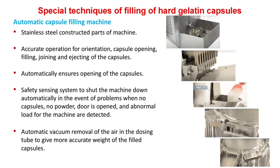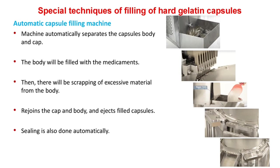Automatic capsule filling machine: constructed of stainless steel parts; provides accurate operation for orientation, capsule opening, filling, joining and ejecting of capsules. Automatically ensures opening of capsules. A safety sensing system shuts the machine down automatically in the event of problems — no capsules, no powder, door is opened, or abnormal machine load detected. Automatic vacuum removal of air in the dosing tube gives more accurate weight of filled capsules. The machine automatically separates the capsule body and cap; the body is filled with medicaments; excessive material is scraped from the body; cap and body are rejoined and filled capsules are ejected. Sealing is also done automatically.